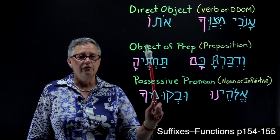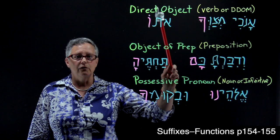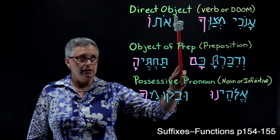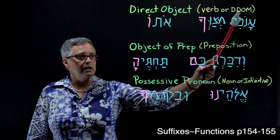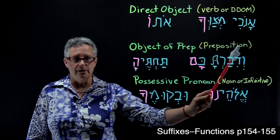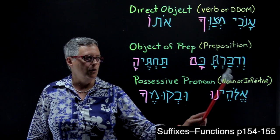So, three different functions depending on what sort of a word the suffix is attached to. Direct object, if it's attached to a verb or a definite direct object marker. Object of the preposition, if it's attached to a preposition. And possessive pronoun, if it's attached to a noun or an infinitive.